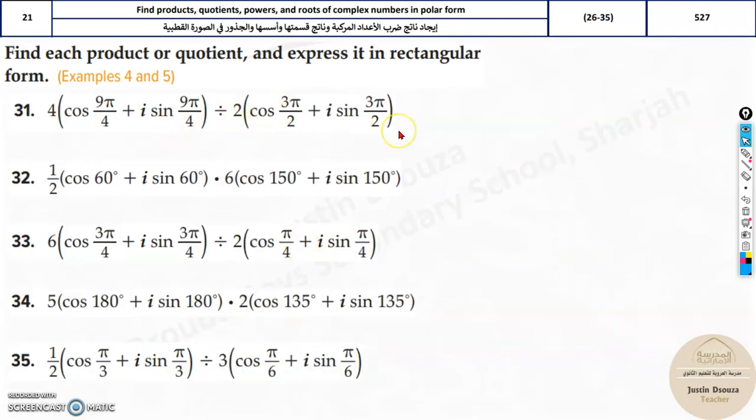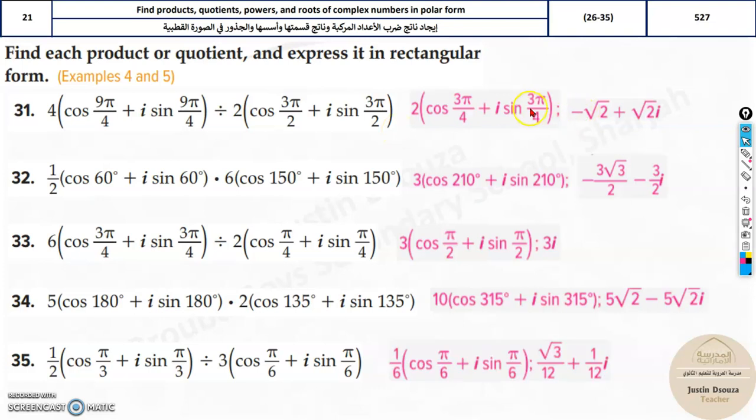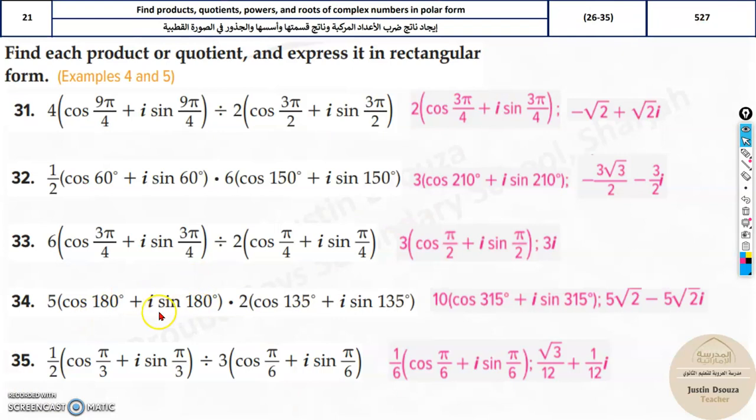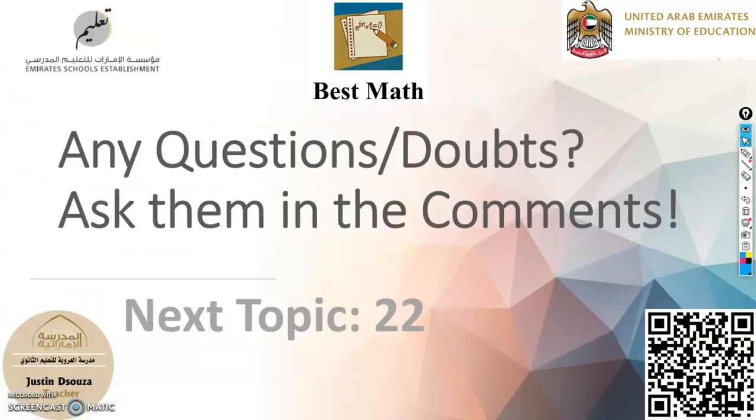That's it for the topic number 21. Wait, there are some more problems. Please do try them all. You can see over here the polar form and the rectangular form is mentioned. Both the forms are mentioned. So do the polar form. Then solve the rectangular form as well. So this is our video. In the next video, we will continue with the topic number 22. So I'll see you next time.